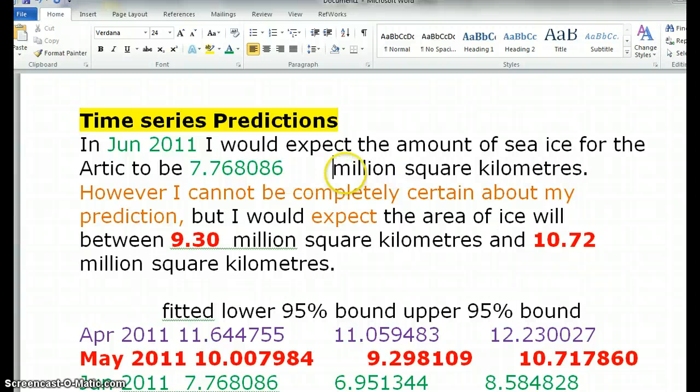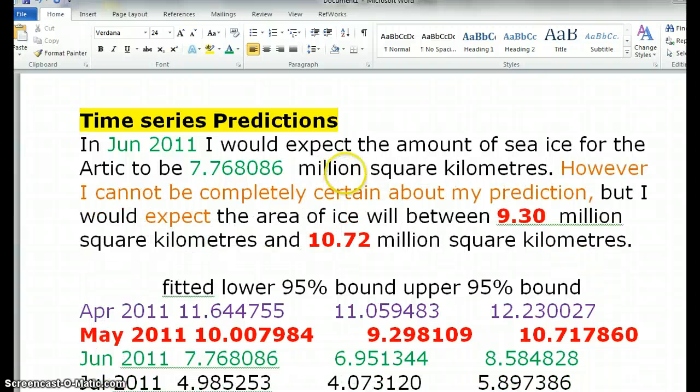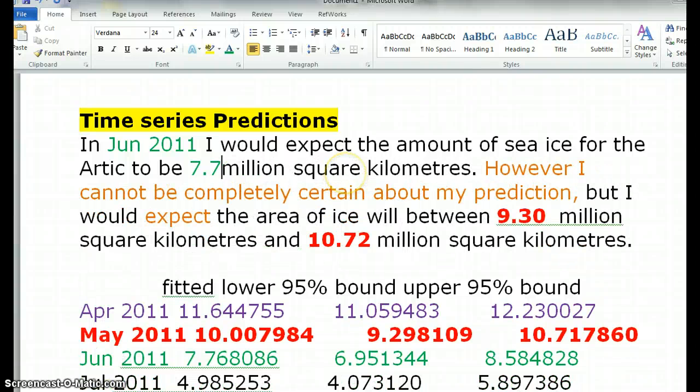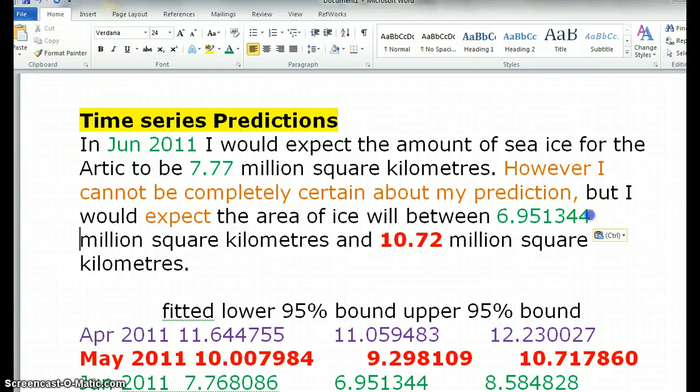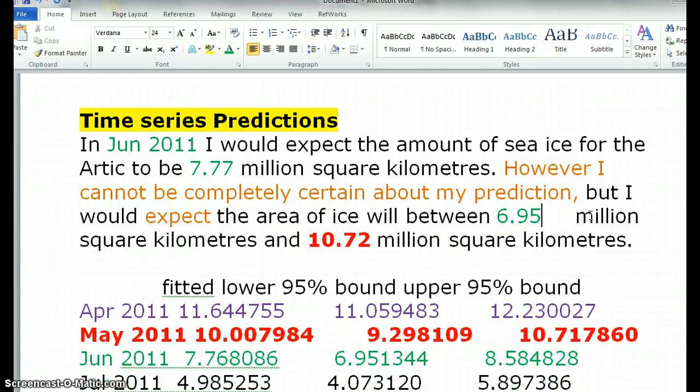I would expect the amount of sea ice to be this value here. However, I need to round it, so that also rounds to 7.77. And I can't be completely certain, but I would expect—and I'm 95% certain actually—that it's between this amount. And again, I need to round it, and in this case, it's just like so.